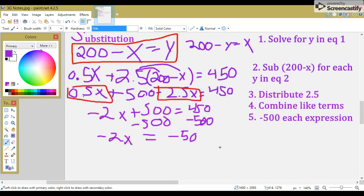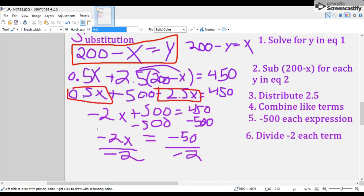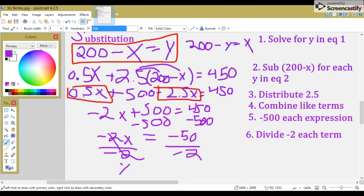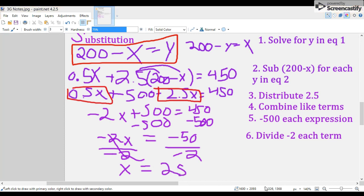To get X by itself, to isolate the X, we divide each term by negative 2. So, 1X, one slice of pizza, small slice of pizza, costs 25. So, they sold 25 small slices of pizza.